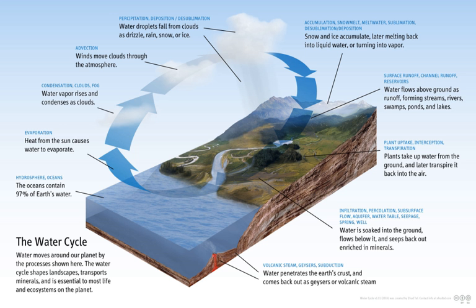Up to the time of the Renaissance, it was thought that precipitation alone was insufficient to feed rivers for a complete water cycle, and that underground water pushing upwards from the oceans were the main contributors to river water. Bartholomew of England held this view, as did Leonardo da Vinci and Athanasius Kircher. The first published thinker to assert that rainfall alone was sufficient for the maintenance of rivers was Bernard Palissy, who is often credited as the discoverer of the modern theory of the water cycle. Palissy's theories were not tested scientifically until 1674, in a study commonly attributed to Pierre Perrault. Even then, these beliefs were not accepted in mainstream science until the early 19th century.